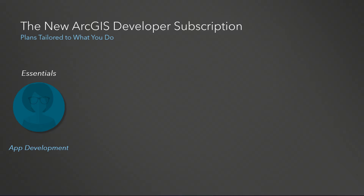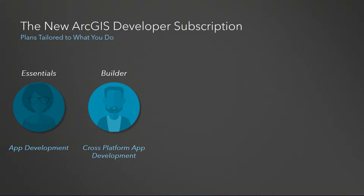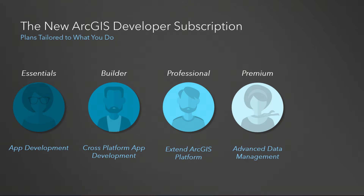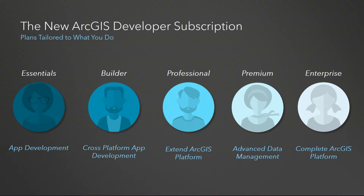The essentials plan gives you the APIs and SDKs so that you can build your applications. The builder plan gives you tools that make cross-platform app development easier. The professional plan allows you to extend the platform either through SOIs and SOEs in ArcGIS Enterprise or through add-ins and configurations in ArcGIS Pro. The premium plan gives you access to advanced data management, and the enterprise plan includes all of our software and tooling — the complete ArcGIS platform.